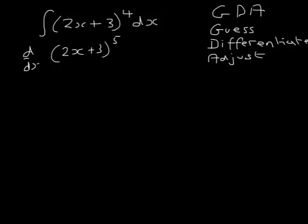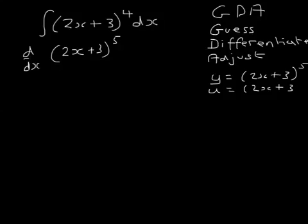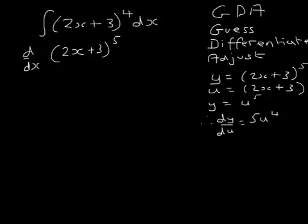So I'm going to differentiate (2x + 3) to the power of 5. Let's do this in the normal way: y equals (2x + 3) to the power of 5. Let u equal (2x + 3), so therefore y equals u to the power of 5. If y equals u to the power of 5, dy/du is 5u to the power of 4. If u equals (2x + 3), then du/dx equals 2.